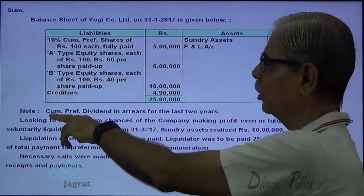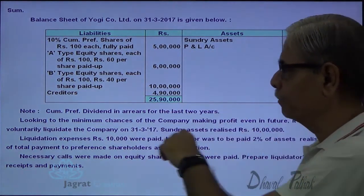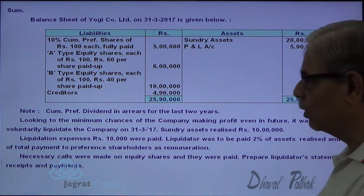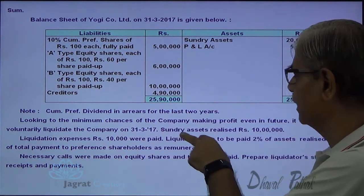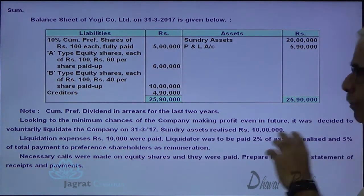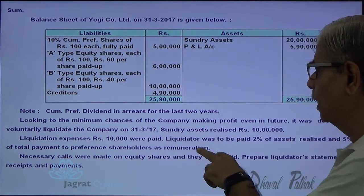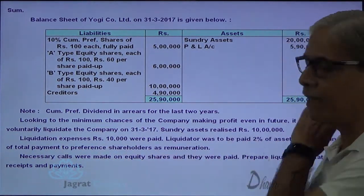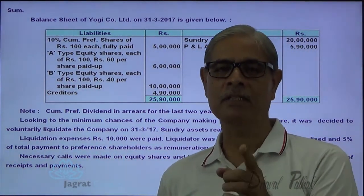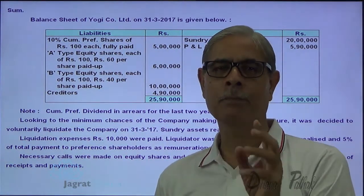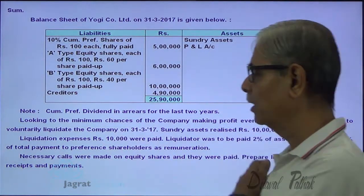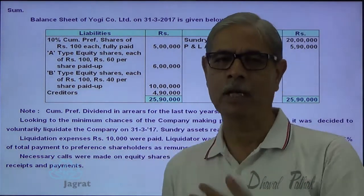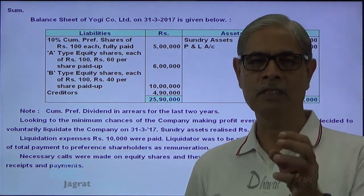Creditors are 90,000. Cumulative preference share dividend is in arrears for the last 2 years. Looking at the minimum chance of the company making profit even in future, it was decided to voluntarily liquidate the company as on 31st March 2017. Sundry assets realized 10 lakhs. Liquidation expenses of 10,000 were paid. The liquidator was to be paid 2% of assets realized and 5% of total payment to preference shareholders as remuneration. Necessary calls were made on equity shares. We are required to prepare the liquidator's receipts and payment account.